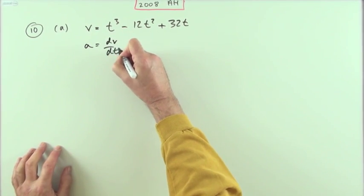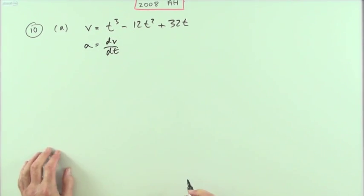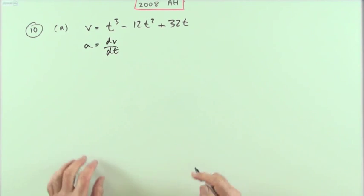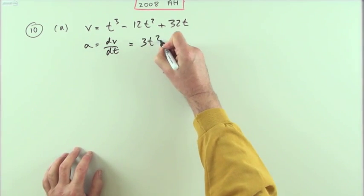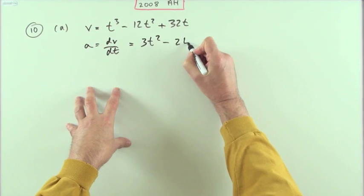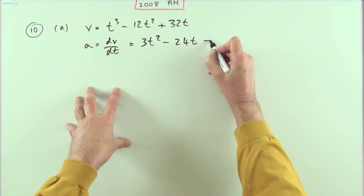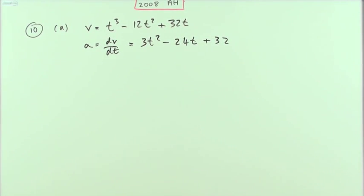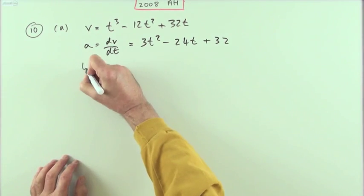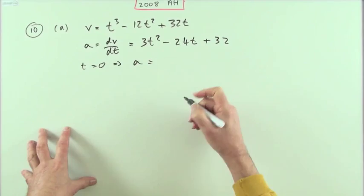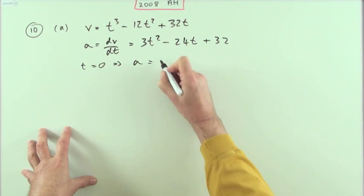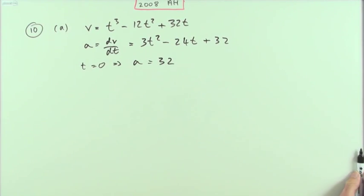To get the acceleration, it's the rate of change of velocity — if velocity is changing, you must be accelerating. The derivative gives us 3t squared minus 24t plus 32. It then asks for the acceleration when t equals zero, so putting zero in, the acceleration is just 32.